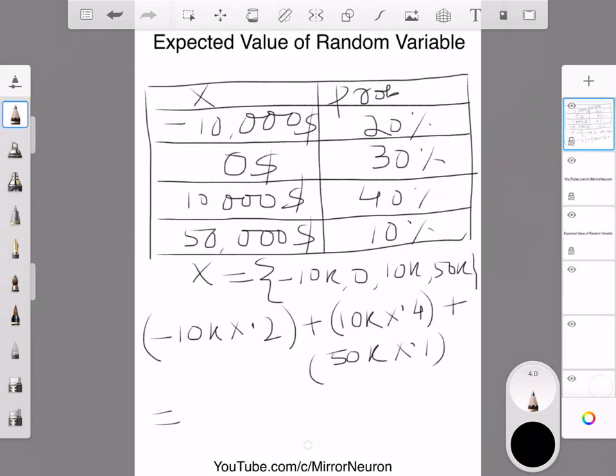And then you have 50k times 0.1, right? And your sum total becomes, in the first case, it becomes minus $2,000 plus $4,000 plus $5,000.